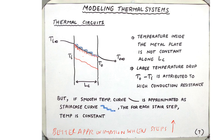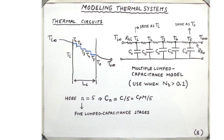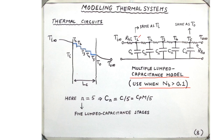With this approximation, we can construct what we call a multiple lumped capacitance model circuit. This is used whenever the Biot number exceeds 0.1, meaning the conduction resistance is not small enough. For example, with five different temperatures T1 through T5 inside the cross-section of the substance, we have five layers of constant temperature, each associated with a capacitance CN.